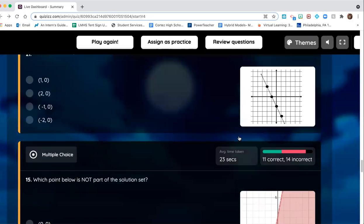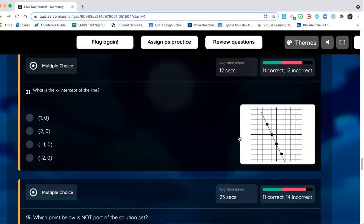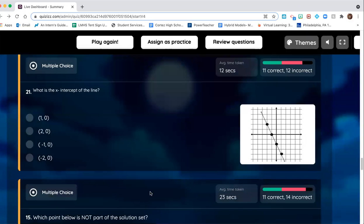X-intercept of this line's pretty simple. We see that we have this point here on our x-axis, and this is negative one, zero. So you should have said this.